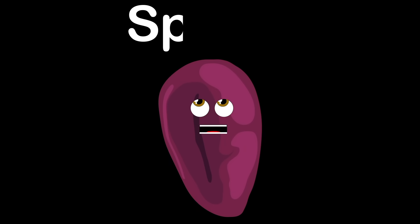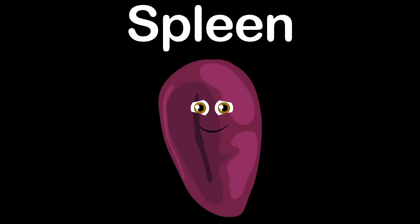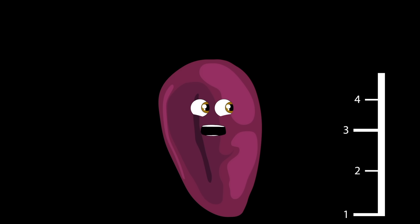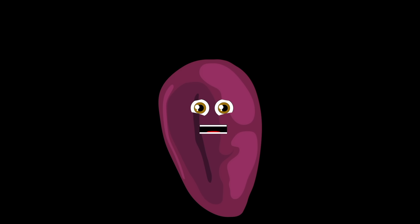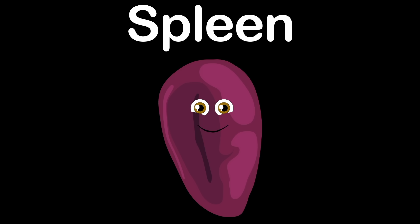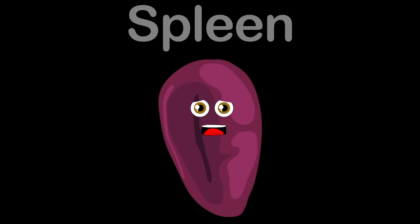I am your spleen. You will learn what this means. I am purple, five inches long, and I'm shaped like a bean. I'm your spleen. You will learn what this means. I produce antibodies and I keep your blood clean.